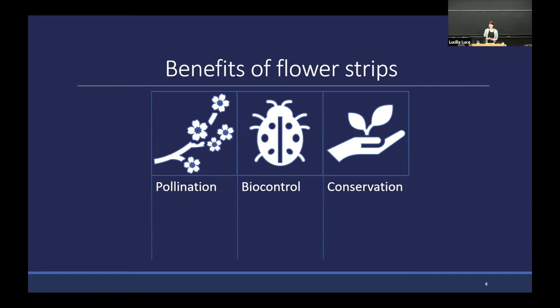Lastly, one more plug for conservation — flower strips are a really great tool for that. A lot of what there is to love about them is their precision: you can choose the location, density, and species composition of these strips so they can be tailored quite specifically to support particular plants or insect species that you're trying to conserve.